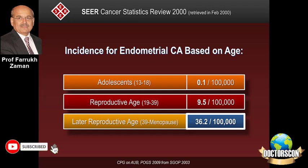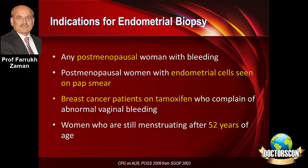If you look at this table, you would appreciate that with advancing age the incidence of endometrial carcinoma increases, whereas in adolescence it is very small, increasing substantially with later reproductive age — although in exact numbers it still remains quite small. Indications for endometrial biopsy include bleeding in a post-menopausal woman, finding endometrial cells, patients taking tamoxifen for breast cancer who complain of bleeding, and women beyond 52 years who are still menstruating. Before biopsy, ultrasound assessment of endometrial thickness is important.